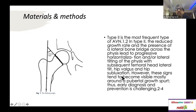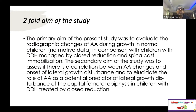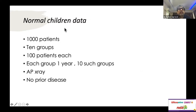Mild AVN is the most common sequela of treating hips with closed reduction, and the authors believe the Olsberg angle would be the best marker to detect mild AVN. The study had two aims: first, to create normative values of the Olsberg angle in children — which the Chinese group worked towards — and second, to compare the Olsberg angle in a cohort of patients who underwent closed reduction and developed mild AVN against those normative values.